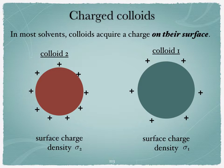As I said in the first lecture, in most solvents, colloids acquire a charge on their surface. So it's exactly as depicted here. I've put pluses on the surfaces, but of course they can also acquire a negative charge. It really depends on the physical chemistry of the environment. So you would have colloid 2 interacting with colloid 1, and they would have respective surface charge densities sigma 2 and sigma 1.